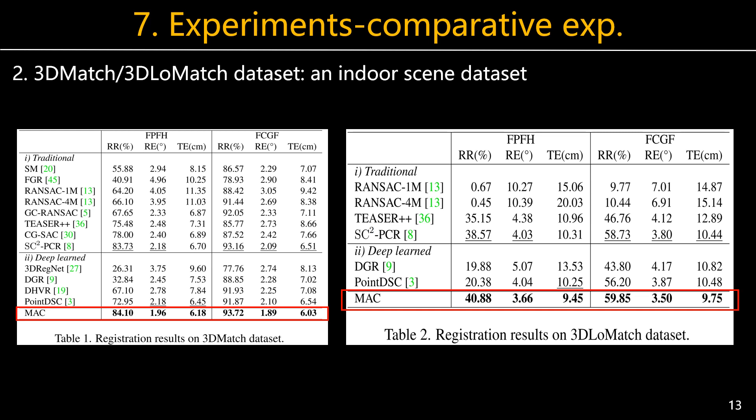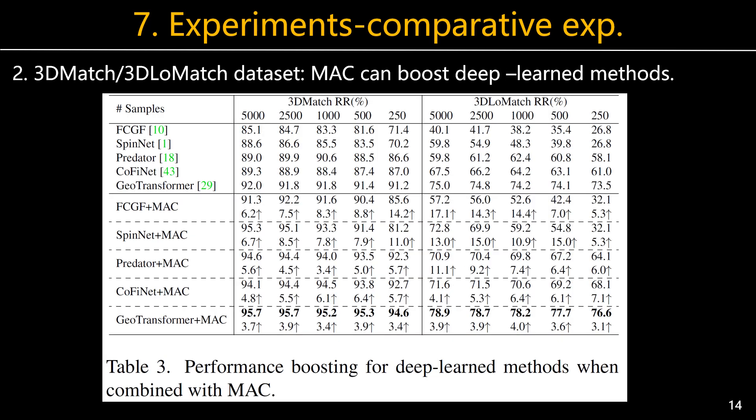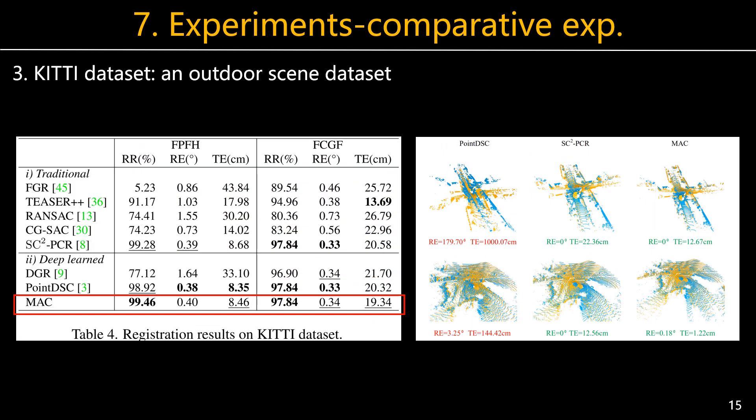The margin is more clear on the 3DLoMatch dataset with low overlapping data. Moreover, we insert MAC into state-of-the-art deep-learned frameworks and find that the performance of all learned methods improves. Hence, MAC is also a good plug-in for deep-learned methods. On the outdoor scene dataset KITTI, MAC again reaches the best registration results.